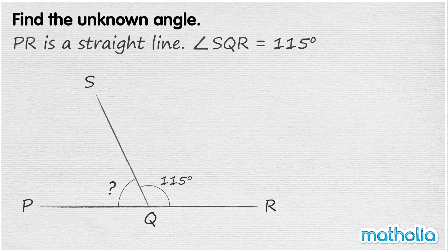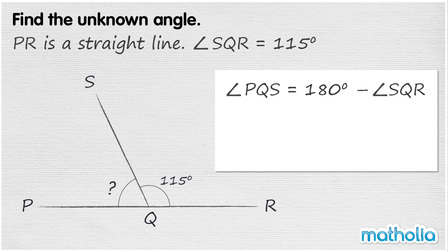PR is a straight line. Angle SQR equals 115 degrees. We need to find the angle PQS. As PR is a straight line, angle PQS is equal to 180 degrees minus angle SQR, which is equal to 180 degrees minus 115 degrees. Angle PQS is equal to 65 degrees.